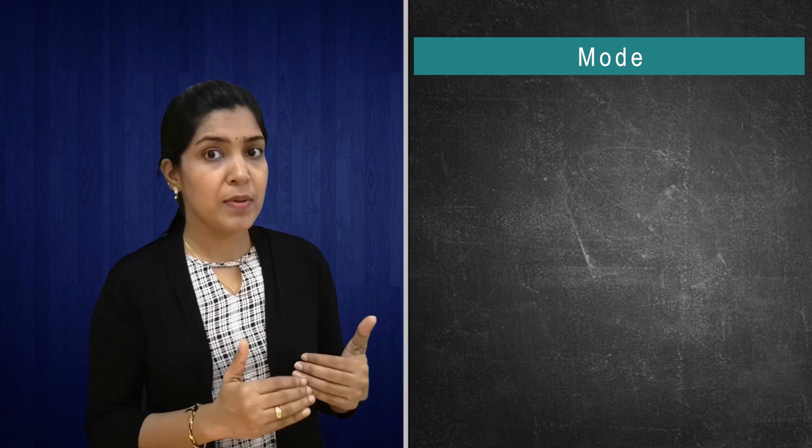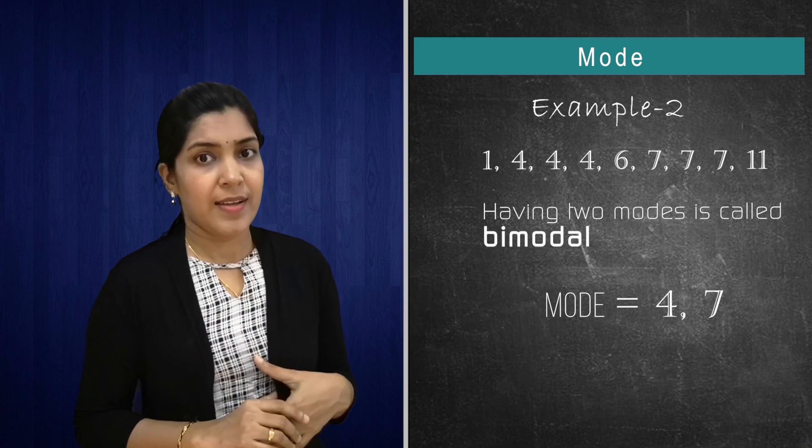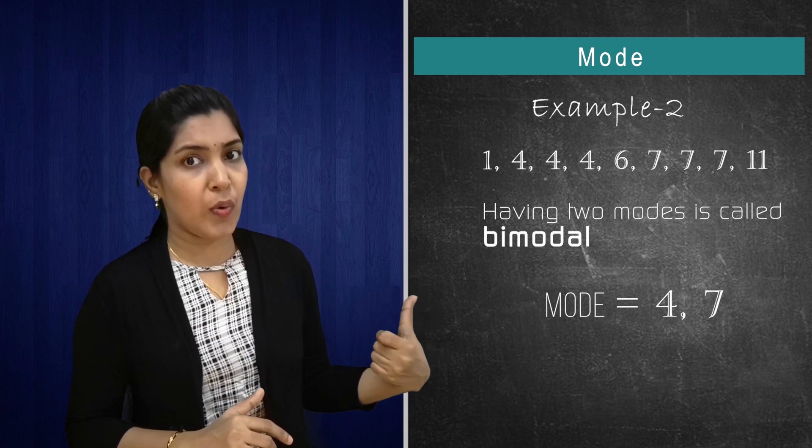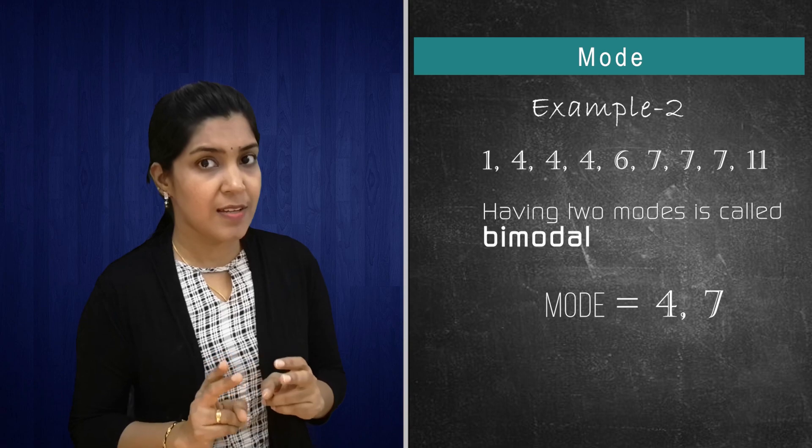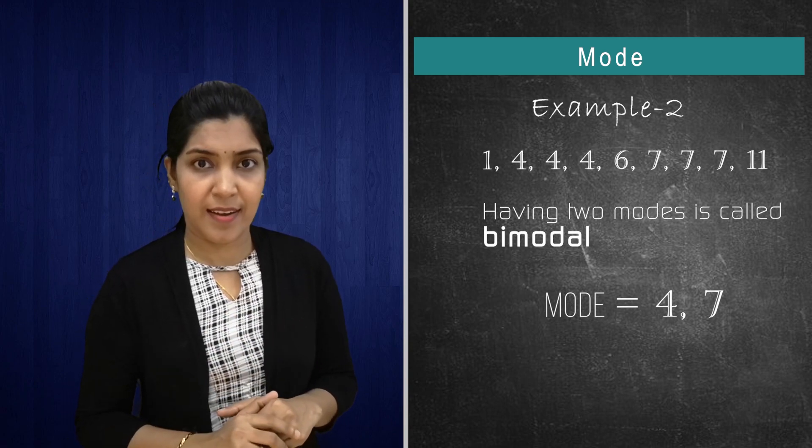If two numbers are repeating, what you have to do? So we have two modes. See here. Here four and seven are repeating. So these two numbers, four and seven are the mode.